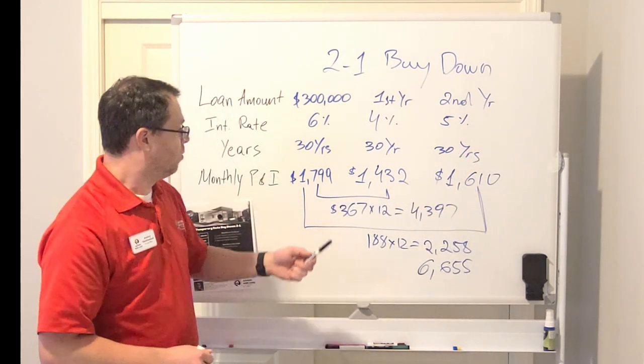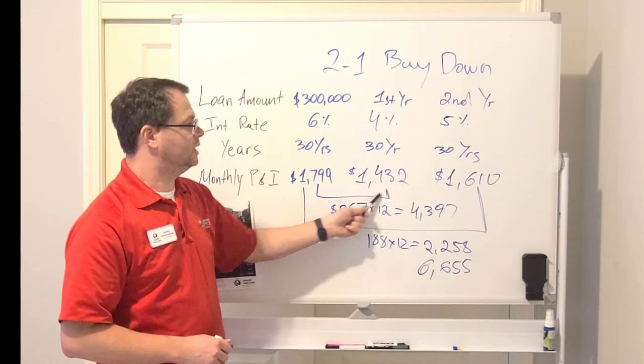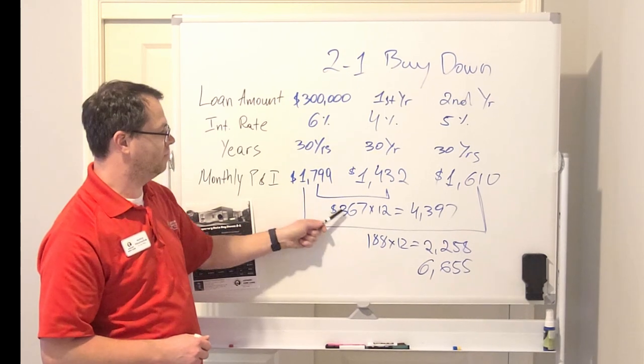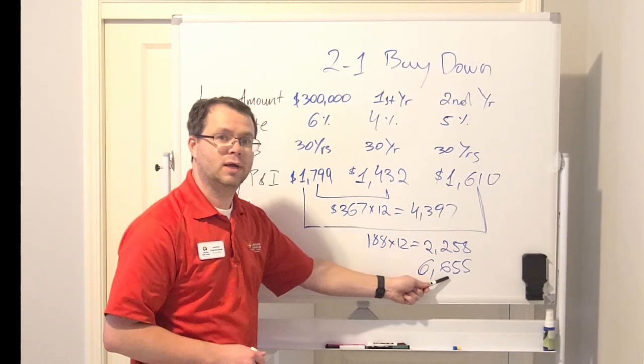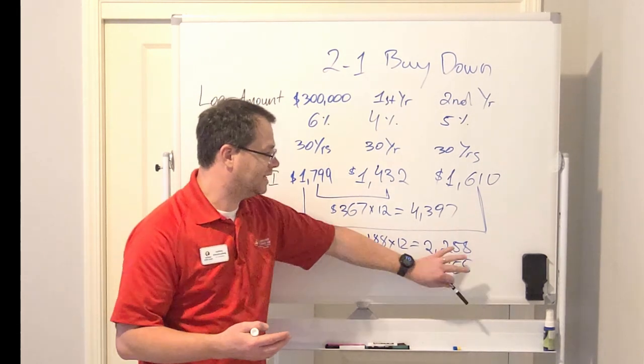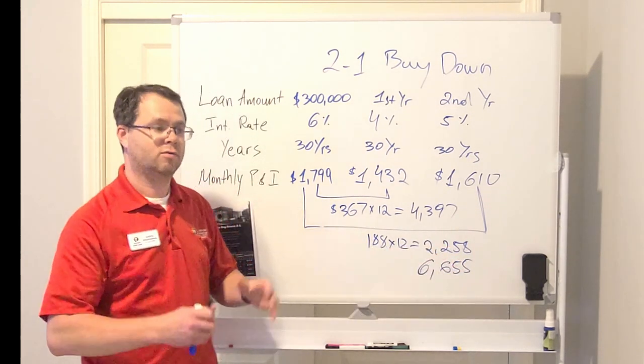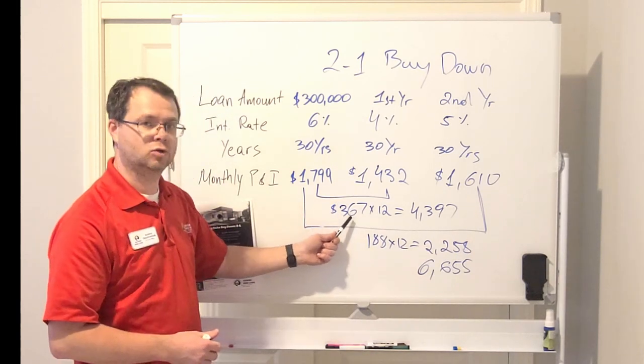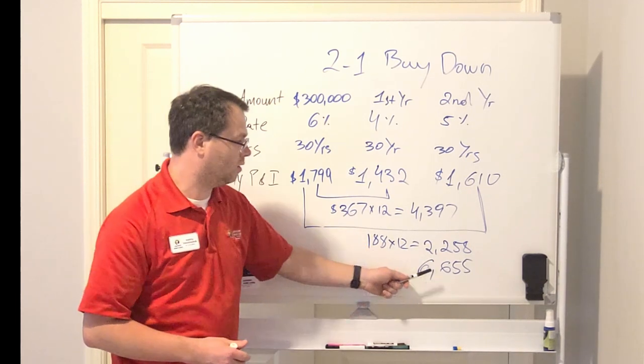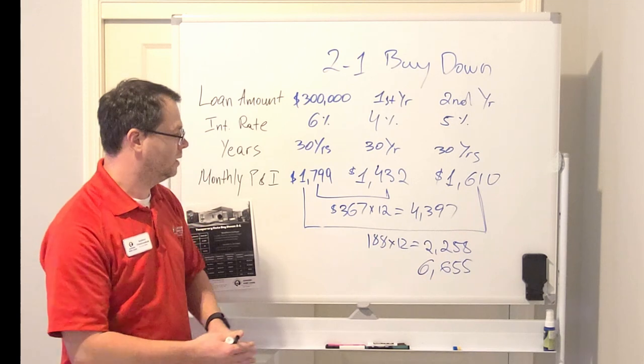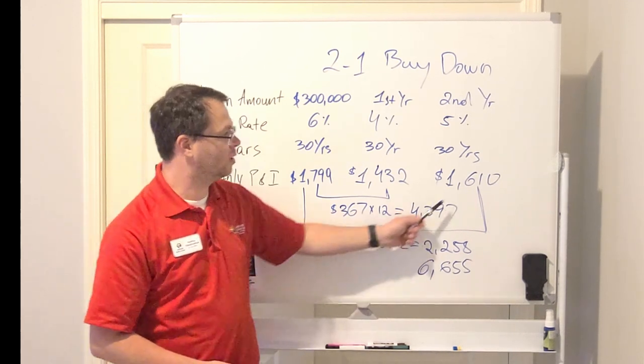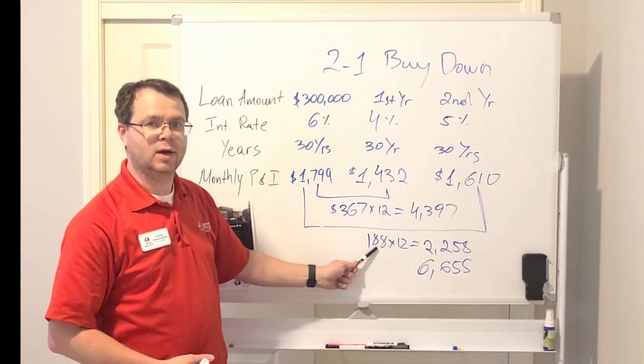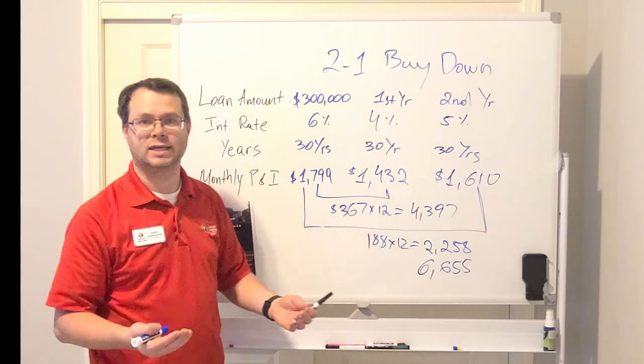So, in reality, when you are making your payment of $1,432 the first year, the $367, which is the difference of what you should have been paying, is going to be coming from a separate escrow account, where this amount is going to be stored for 24 months. Because for the first 12 months, the lender is going to draw $367 from this account. And then for the second 12 months, they are going to be drawing $188. They will be receiving $1,610 from you as you are making your monthly payments. And they will be taking $188 from the separate account that they established.